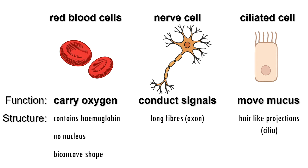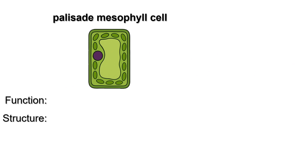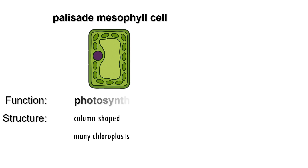Plants also have specialized cells. For example, palisade mesophyll cells are found just beneath the upper epidermis of plant leaves. They are column-shaped and packed with chloroplasts, which trap light energy. Their main function is photosynthesis, using carbon dioxide, water, and light energy to make food for the plant.